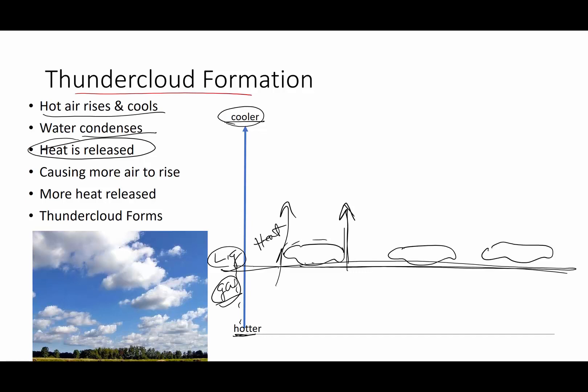So the heat given off by the condensation of the water creates an updraft. Hot air rises, cold air falls. And so this causes air to move up. This pulls more air in from down below and it goes to higher elevations where it's colder. What happens? At a higher elevation, the water condenses and it releases heat. So that means it builds up. That creates more of an updraft. It goes to a higher elevation. It cools, it condenses, and it releases heat.